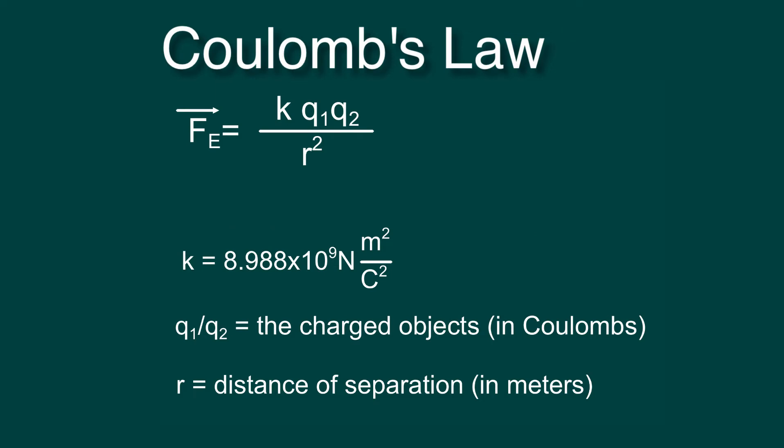Coulomb's law is K Q1 Q2 divided by R squared. K is Coulomb's constant, which is 8.988 times 10 to the ninth newtons meter squared per coulomb squared. Q1 and Q2 are the charged objects that are interacting, which is measured in coulombs, and R is the distance of separation between those two objects measured in meters.